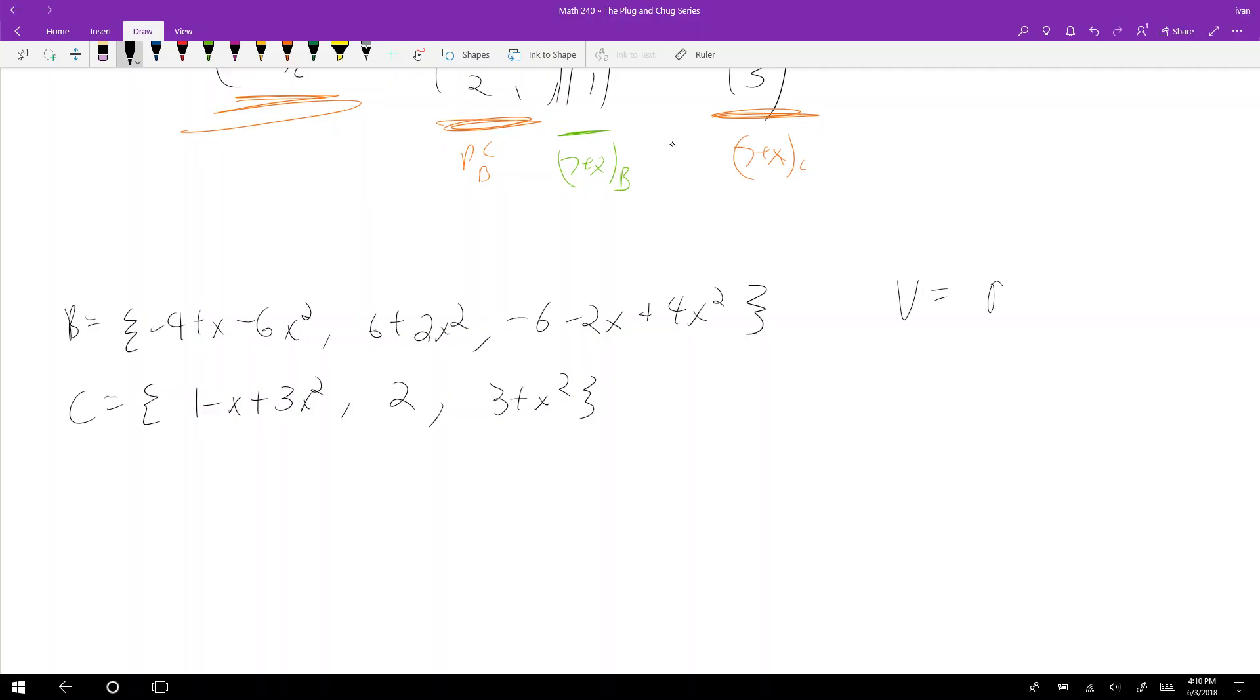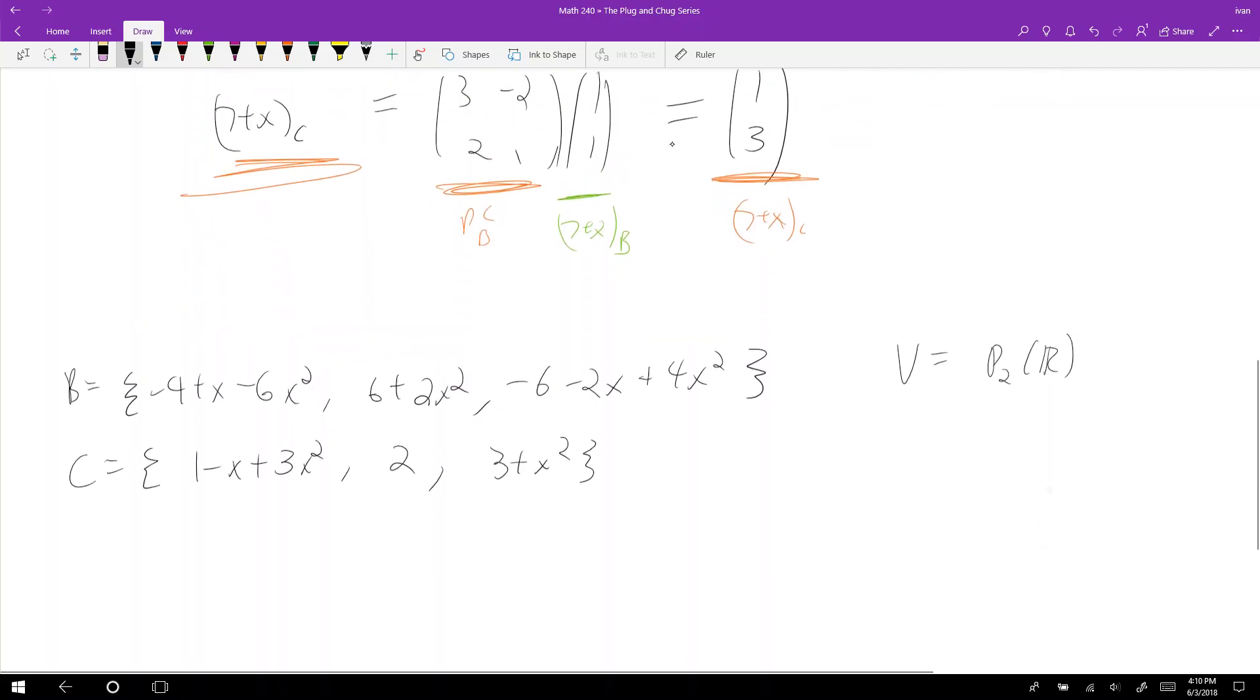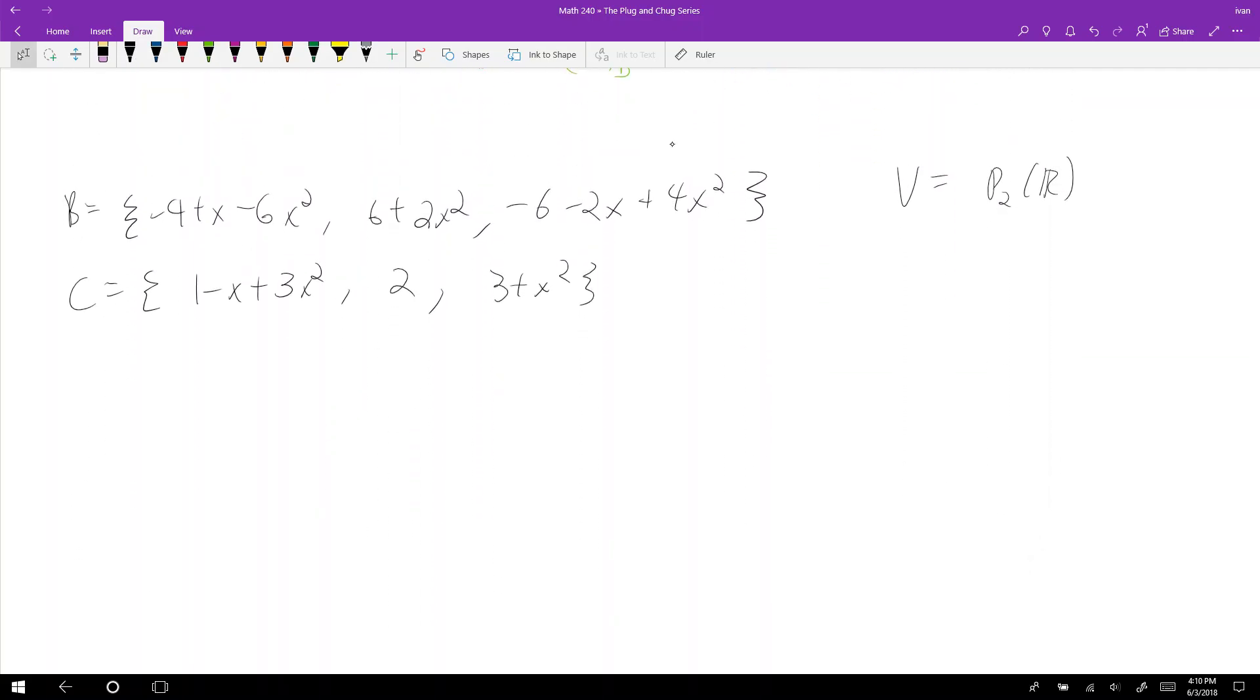It looks like P2R, right? So notice in this example, I want to be very clear: these two bases are for this one vector space. We're only inside one vector space, but I have two bases. B and C are different bases for this one vector space.